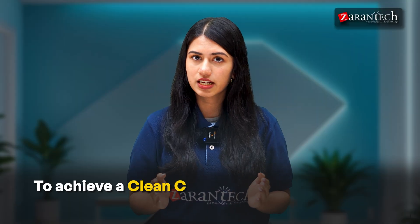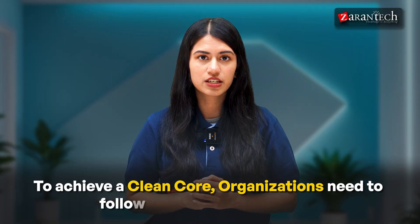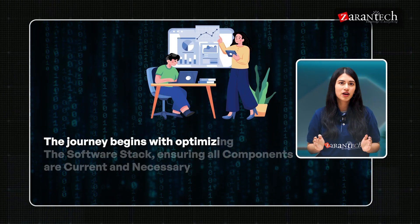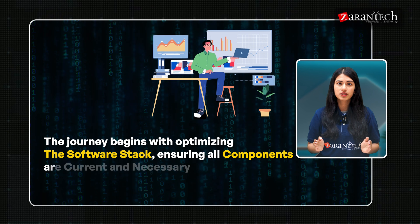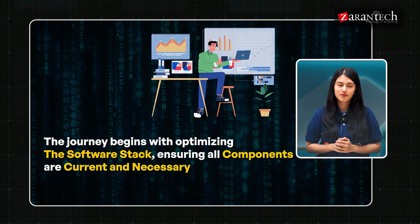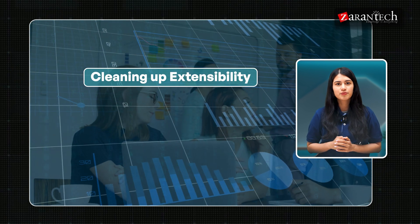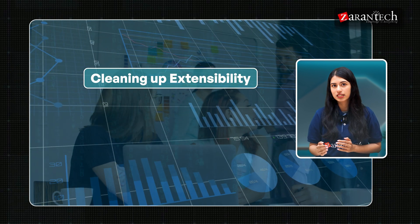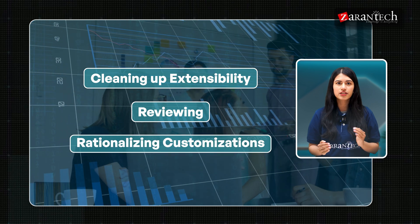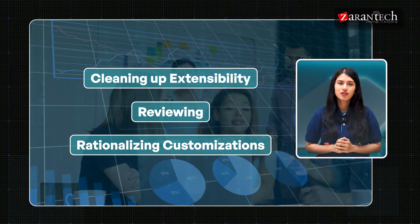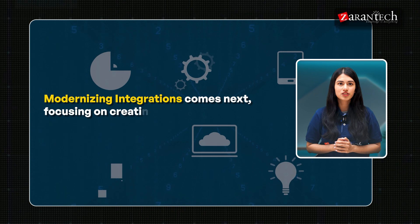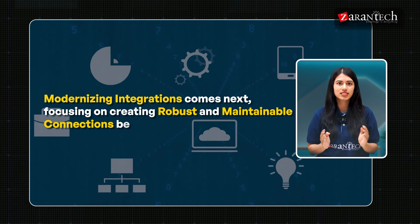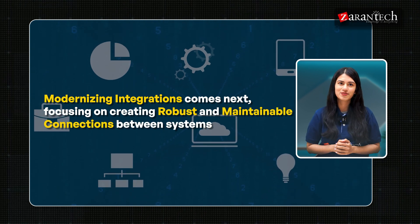To achieve a clean core, organizations need to follow a structured approach. The journey begins with optimizing the software stack, ensuring all components are current and necessary. This is followed by cleaning up extensibility, which involves reviewing and rationalizing customizations.